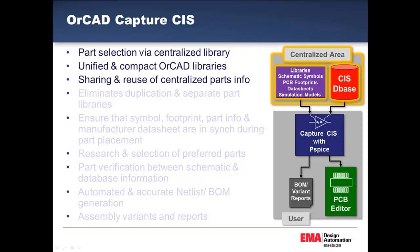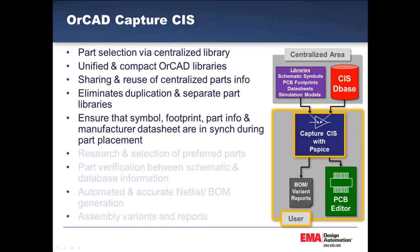You can easily share and reuse centralized part information. CIS will eliminate any duplication in separate part libraries. Also, it ensures that symbols, footprints, parametric part information, and manufacturer data sheets are in sync during part placement.